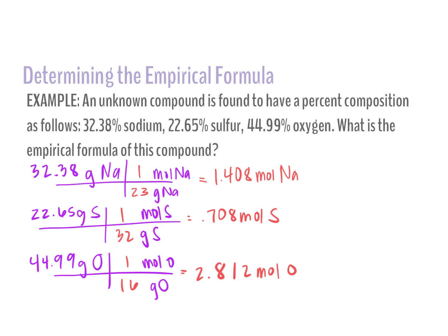Looking back at the steps: we've put our percentages to grams and converted to moles. The next step is to divide by the smallest number of moles. The smallest mole value here is sulfur at 0.708. So I'm going to divide each element by 0.708. Obviously one of them — sulfur — is dividing by itself, so it comes out to one.